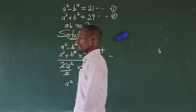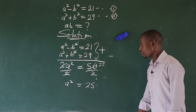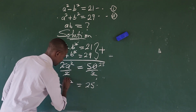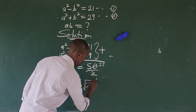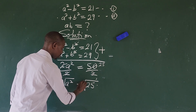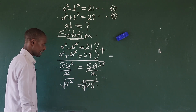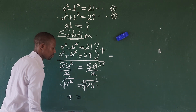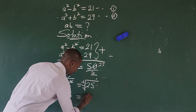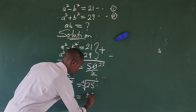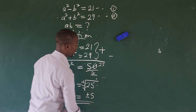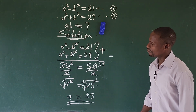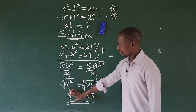We're looking for a, so we take the square root of both sides. Taking the square root of a squared and the square root of 25, and introducing the plus-or-minus, we get a equals plus or minus 5.